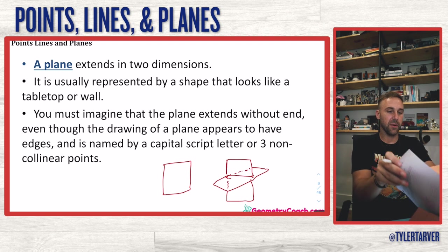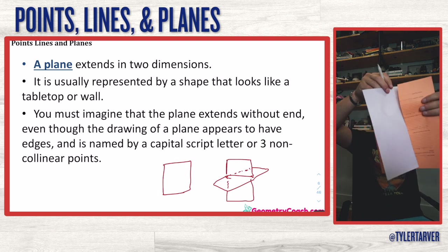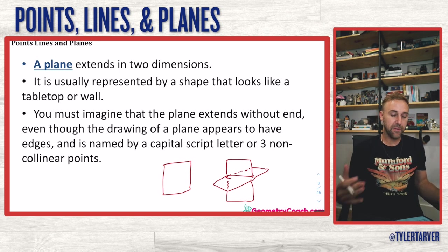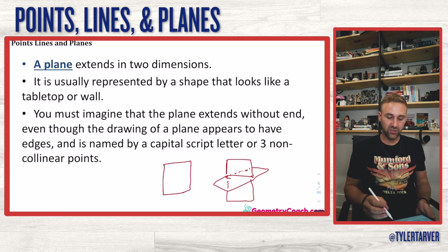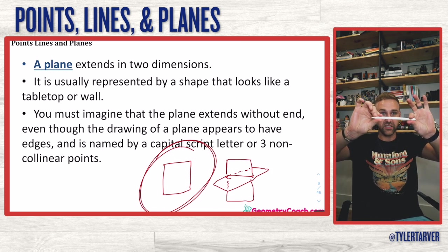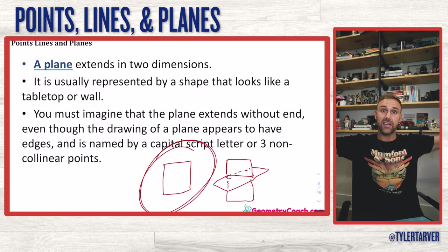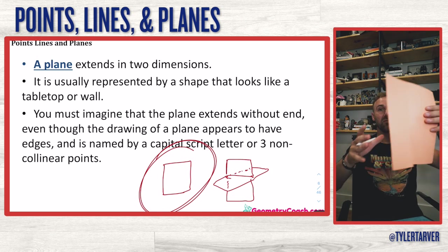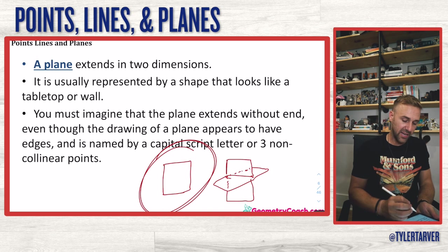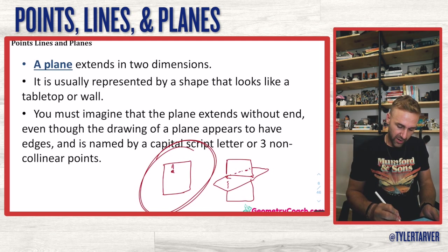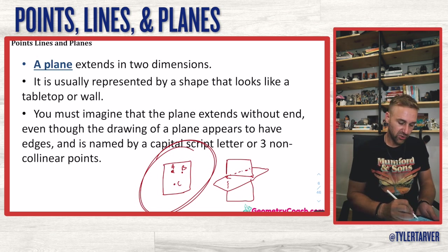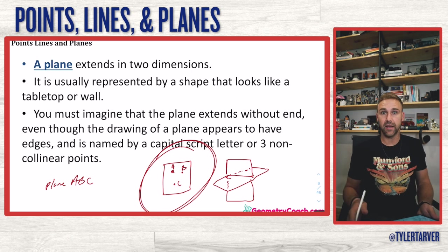A plane extends forever — it's like a piece of paper that extends forever out into the world. That's how you have to picture a plane. If you want to label a plane and you've got point A, point B, and point C on it, you need at least three points to make a plane, and then you would just call it plane ABC.